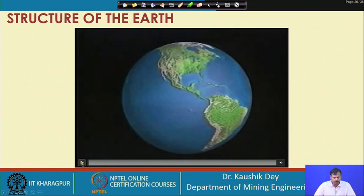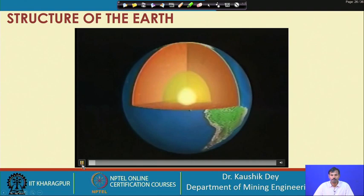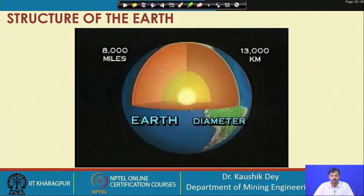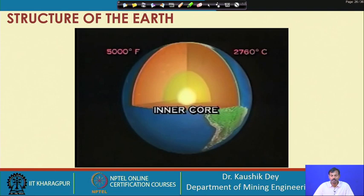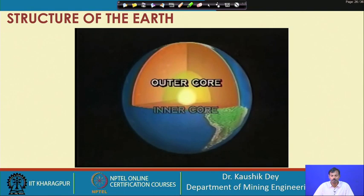If we could split open our planet, we would see it is made up of various zones. The earth is approximately 8000 miles or 13,000 kilometers in diameter. The inner core is thought to be a solid metal ball about 750 miles or 1200 kilometers thick, at least 5000 degrees Fahrenheit or 2760 degrees Celsius. Surrounding the inner core is the outer core, which is about 1400 miles or 2300 kilometers thick.